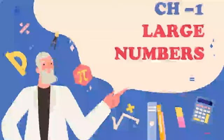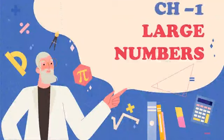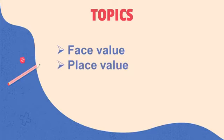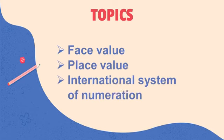In that session, we learnt the place value chart and how to write number names and numerals. Let's start today's session — continuation of chapter 1, Large Numbers. Topics to be covered in this session are: Face Value, Place Value, and International System of Numeration.